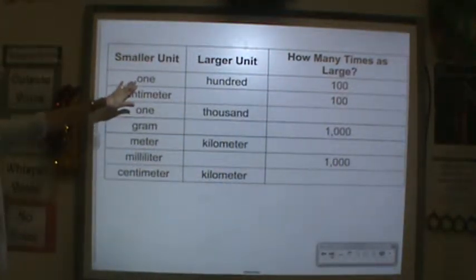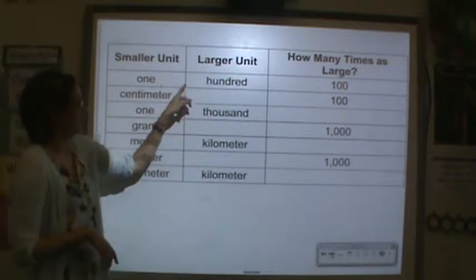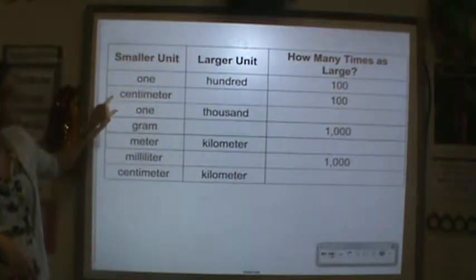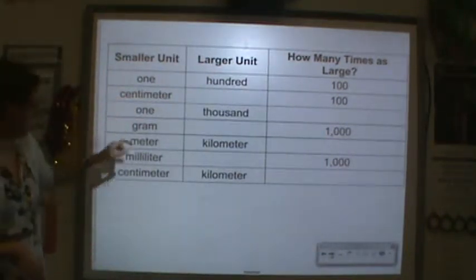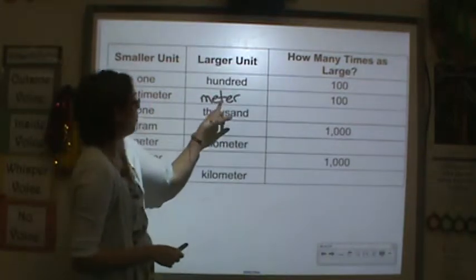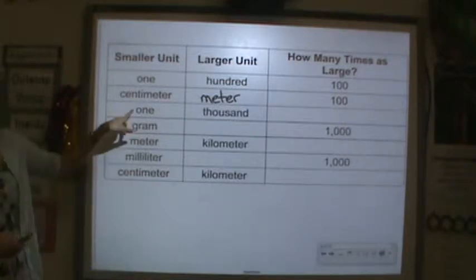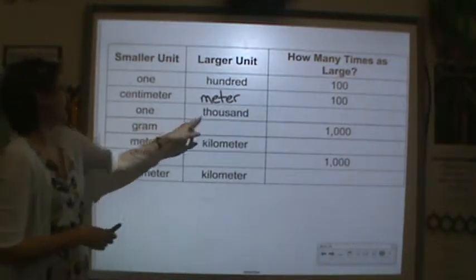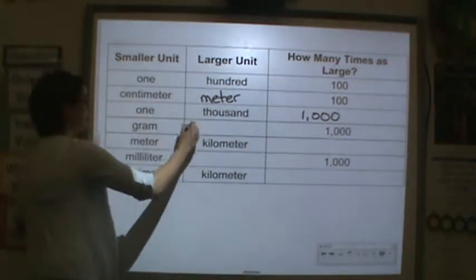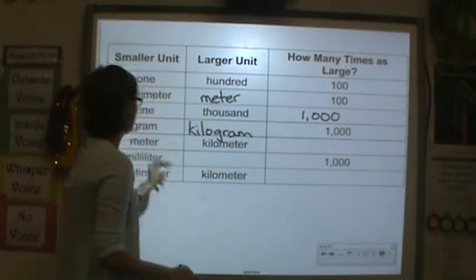We know that 1 and 100 - how many times larger is 100 than 1? Well, 1 times 100 is 100. So a centimeter is smaller than a meter by 100 times. For 1,000 - a thousand is 1,000 times larger than 1. So a kilogram is 1,000 times larger than a gram.